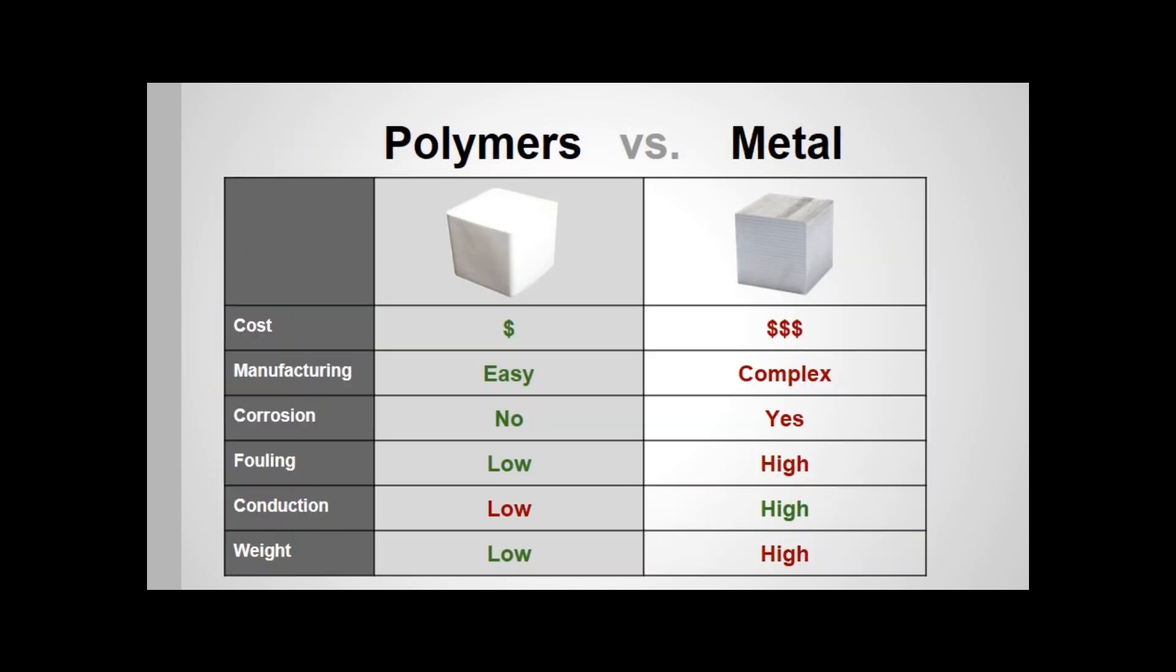Let's take a look at the characteristics of the two categories of materials used in heat exchangers. Traditional metal is expensive and complex to manufacture. Metal also corrodes over time and exhibits a high degree of fouling. Even though it has great thermal properties, it has a large weight penalty.